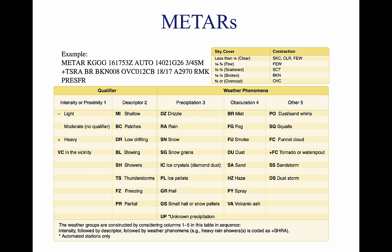9. Temperature and dew point — 18/17 — the air temperature and dew point are always given in degrees Celsius. Temperatures below zero degrees Celsius are preceded by the letter M to indicate minus. 10. Altimeter setting — A2970 — reported as inches of mercury (Hg) in a four-digit number group, always preceded by the letter A. Rising or falling pressure may also be denoted in the remarks section as PRESR or PRESFR, respectively.